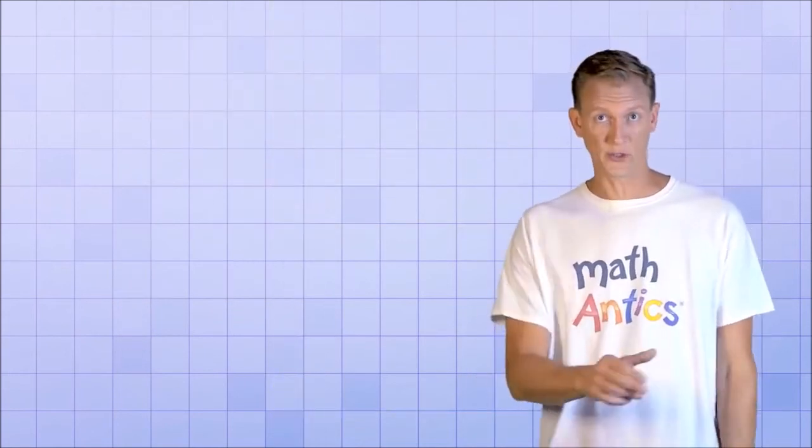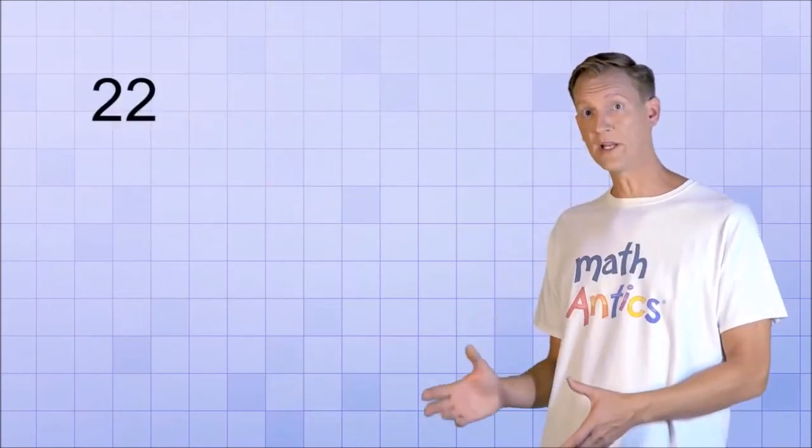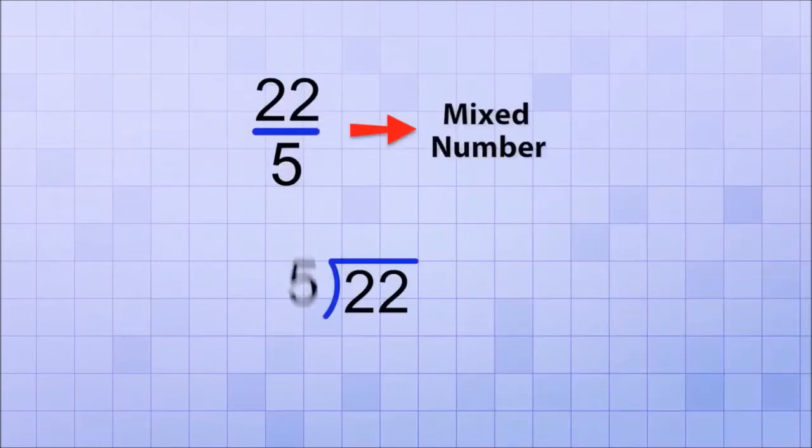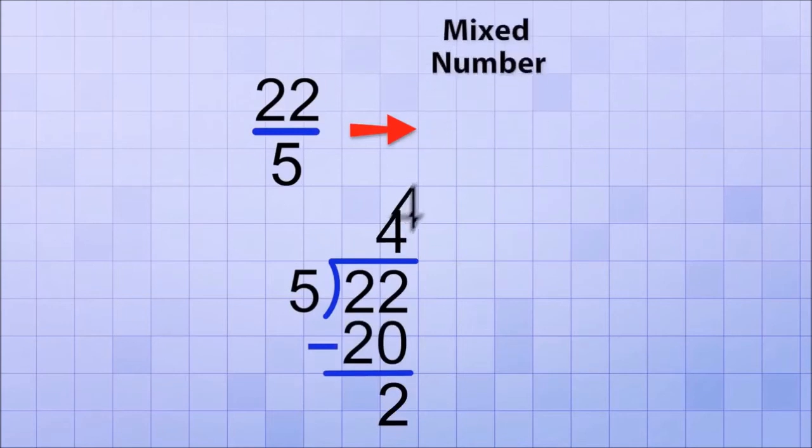Let's do one more example to make sure you've got that. 22 over 5 into a mixed number. If we divide 22 by 5, we see that 5 will go into 22 4 times with a remainder of 2. That means that the whole number part of the mixed number will be 4 and the fraction part will be 2 over 5, because our remainder was 2. That's how many fifths will be left over. So 22 over 5 is the same as 4 and 2 fifths.